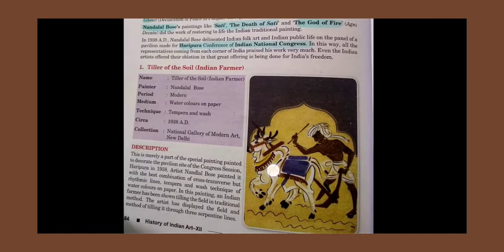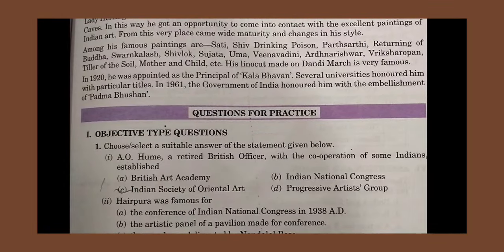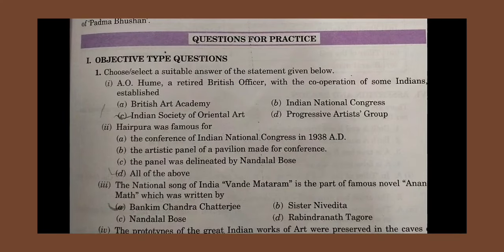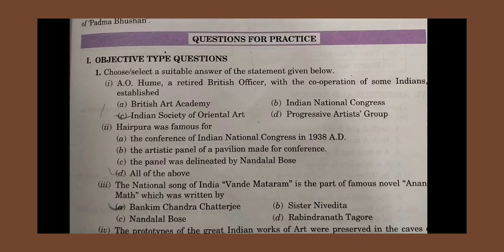With this, we have completed the chapter on how Indian artists contributed to the National Freedom Movement. Now let's solve some objective questions. First: A.O. Hume is a retired British officer who, with the cooperation of some Indians, established the Indian National Congress. Second: Haripura was famous for the Indian National Congress conference, the artistic panels made for the conference, and the panels delineated by Nandalal Bose — the answer is 'all of these.'